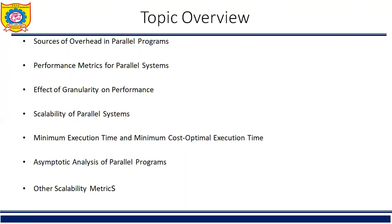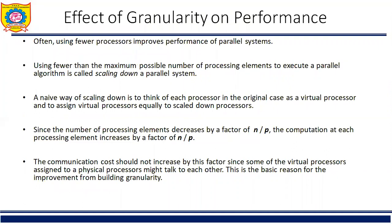Today we will start our third article of this unit: effect of granularity on performance. Remember the example of adding n numbers on n processors. In that example, the instance of the algorithm discussed is not cost optimal. In the previous video I already covered what is meant by cost.